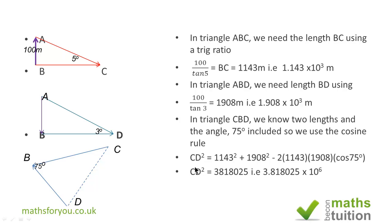But because this is CD squared, we need to find CD. So the square root of CD squared is CD. We need to find the square root of the value of CD squared, and that gives us CD as 1,954 meters, or 1.954 × 10³ meters.